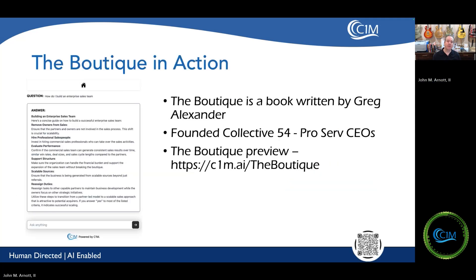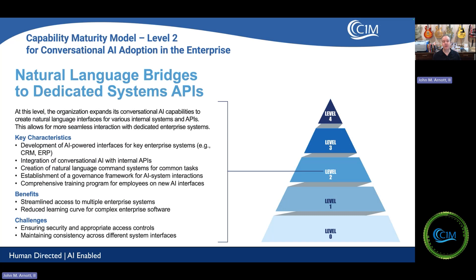The second part of the Capability Maturity Model is level two: having a natural language interaction with your systems. We all have different systems — CRM, ERP, marketing automation, proprietary systems, industry-specific systems. Many commercial systems have an API, an application programming interface. Typically an API is used to pull data into a dashboard or connect one system to another. But we can also create a natural language bridge — an interface where someone asks a question in natural language, it connects to the API, gets the data back, and summarizes it.